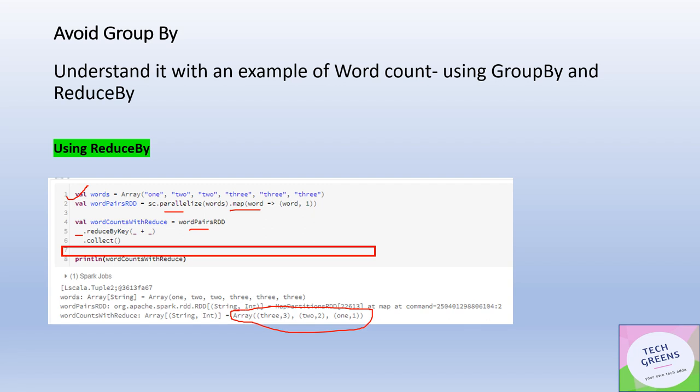If you see with this array, it is giving me a tuple in the form of word and what is the count of that word. For three, it has given the three count - we had three words. For two we have two words, and for one we had one word.